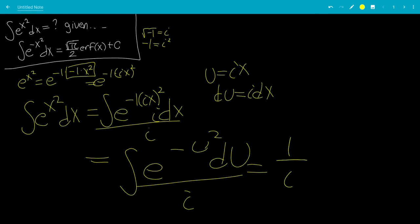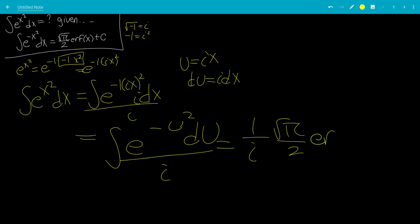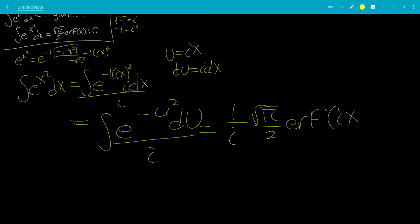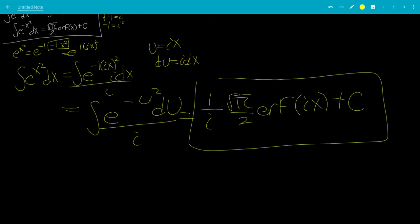So this will be 1 over i square root of pi over 2, the error function of u, which is ix, and then plus c.